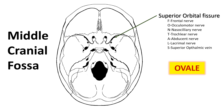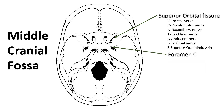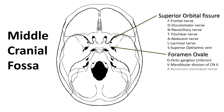Use 'OVALE' to remember the contents of the foramen ovale. They are the otic ganglion (just inferior to the foramen), the mandibular division of the trigeminal nerve, accessory meningeal nerve, lesser petrosal nerve, and emissary vein.